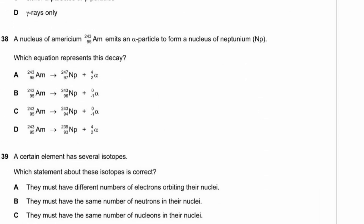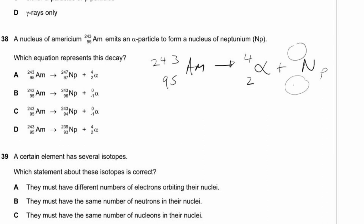Question 38. A nucleus of americium-243 (atomic number 95) emits an alpha particle to form neptunium. An alpha particle has 4 nucleons and 2 protons. Bottom number for neptunium: 95 − 2 = 93. Top number: 243 − 4 = 239. The equation gives neptunium-239 with atomic number 93. Answer D.